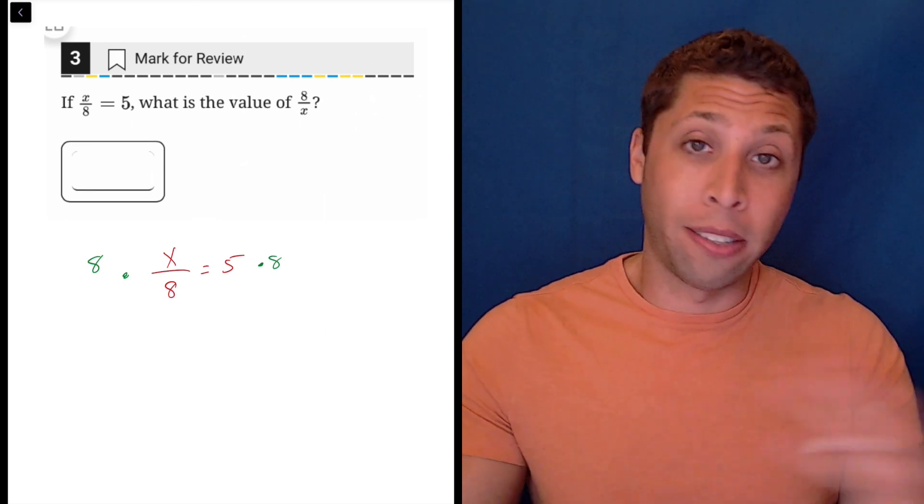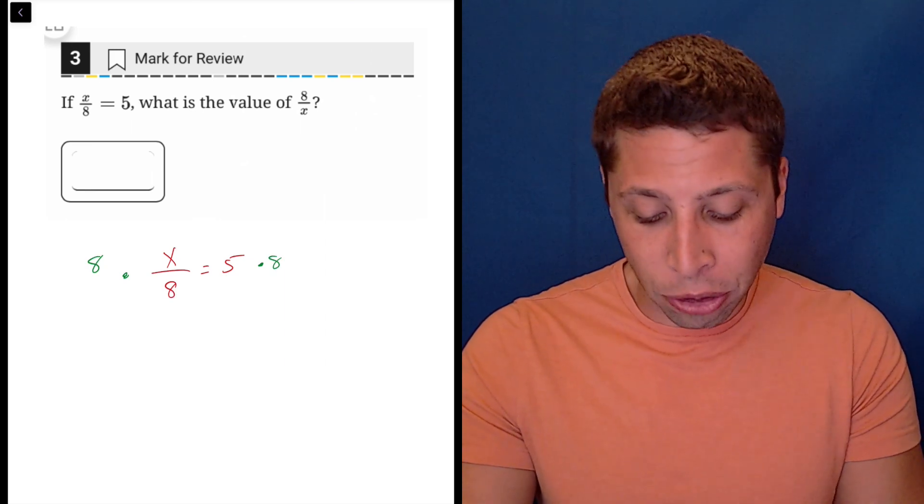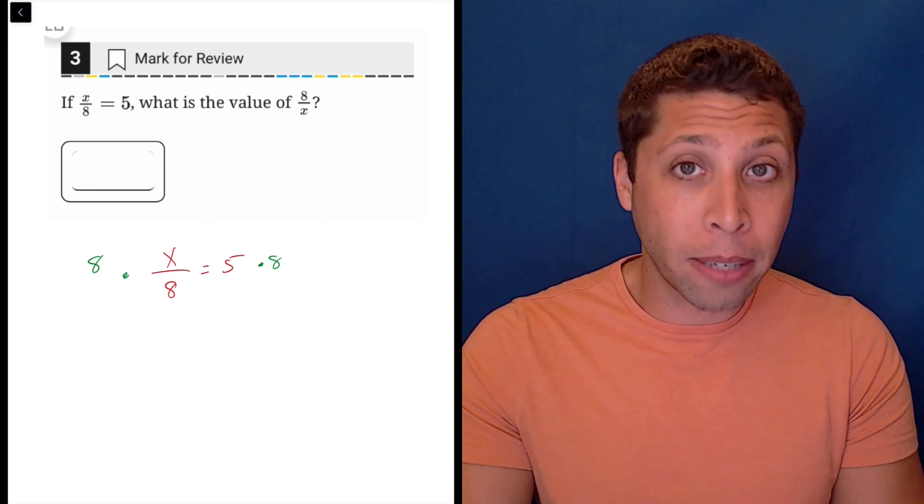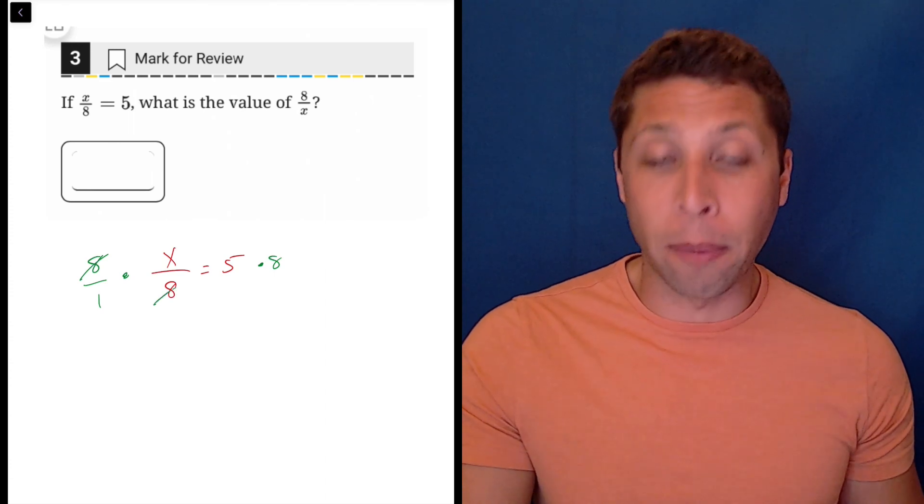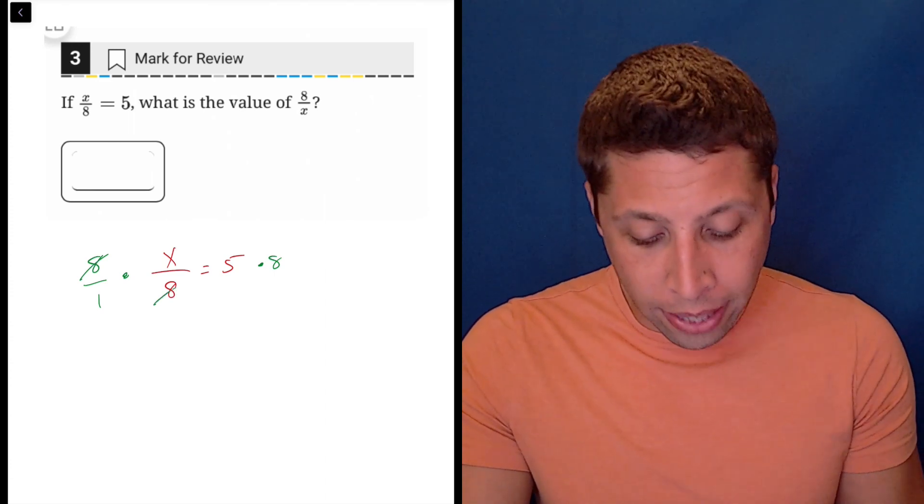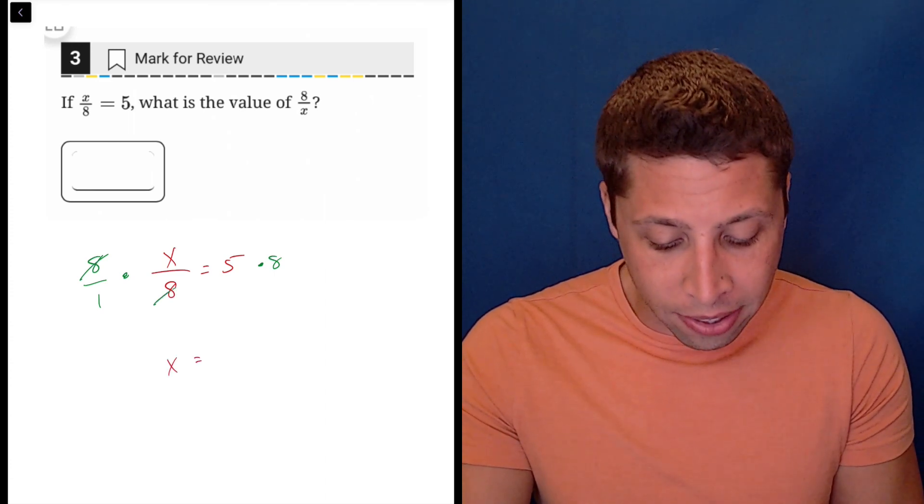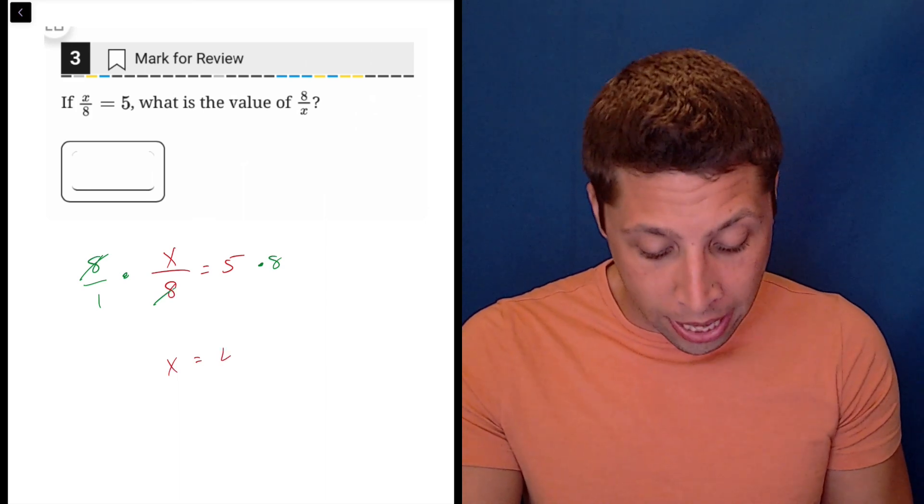If you're dealing with a situation where you have the same number on the top and the bottom, those are going to cancel out. So basically what we're doing is we have an eight on the top and an eight on the bottom that goes away and leaves us with just an X on the left. And then five times eight is 40.